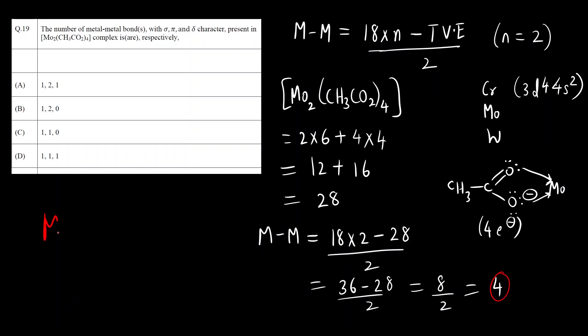4 metal-metal bonds: 1, 2, 3, 4. This type of bond, that is more than 3 bonds, are mostly seen in organo-metallic complexes. We have to find out its character. Before that, let us see the formation of a delta bond.